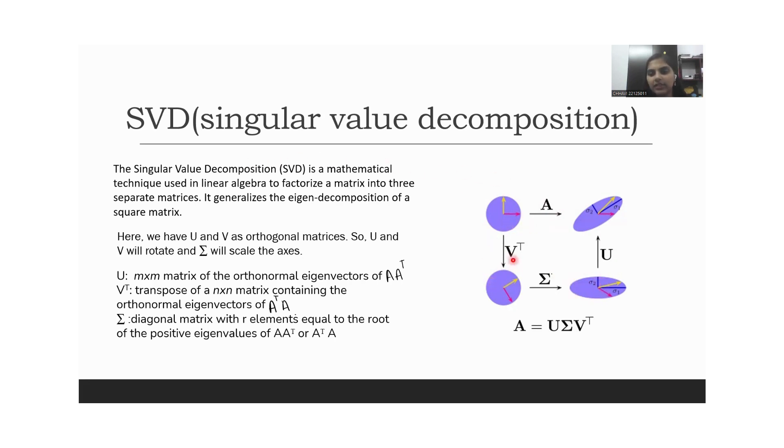So how do we find V, U, and Sigma? U is the M cross M matrix of the orthonormal eigenvectors of AA transpose. V transpose is the transpose of N cross N matrix containing the orthonormal eigenvectors of A transpose A.